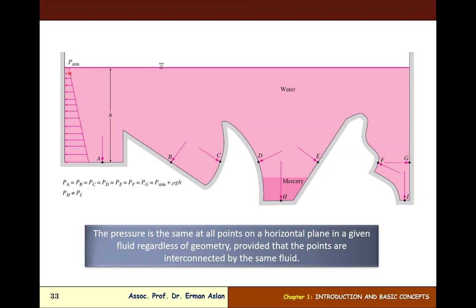The pressure formula is atmospheric pressure plus density times gravitational acceleration times height H. All these pressures are the same, but P_I is greater than P_A, P_B, P_C, P_D, P_F, and P_G.